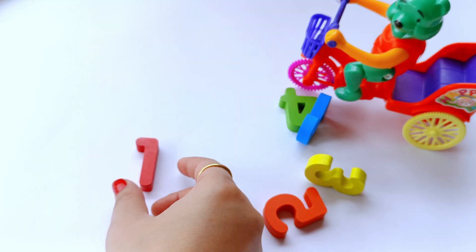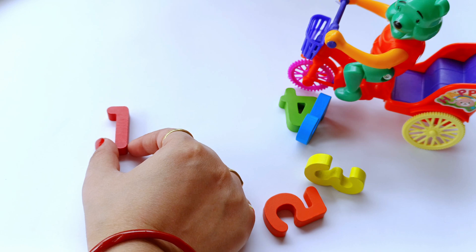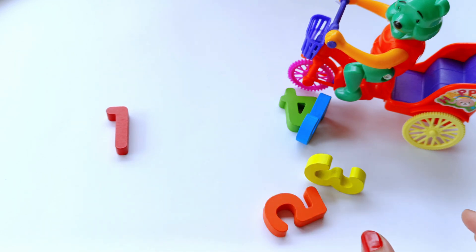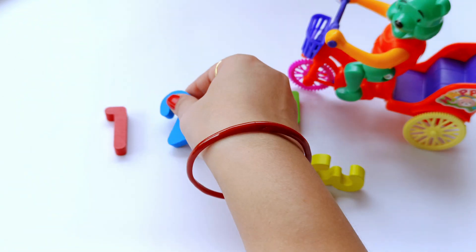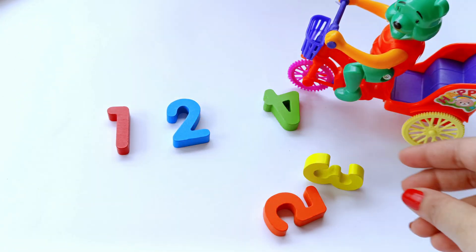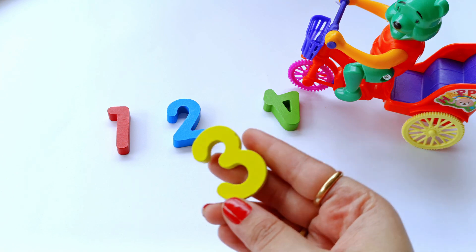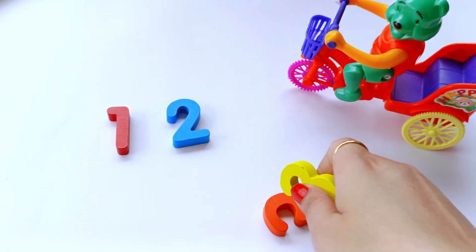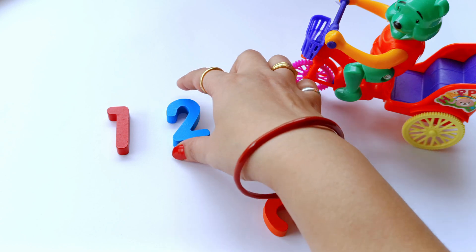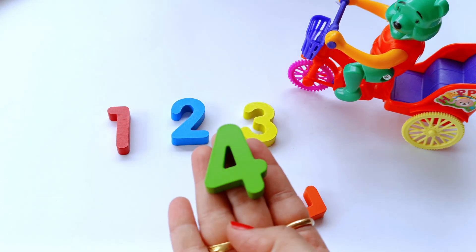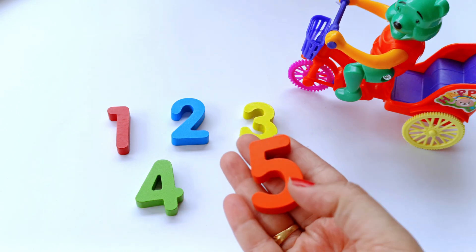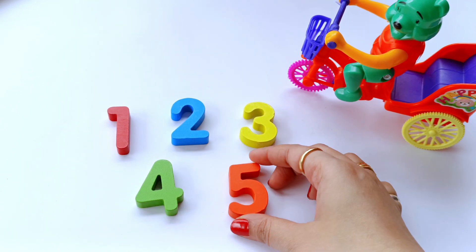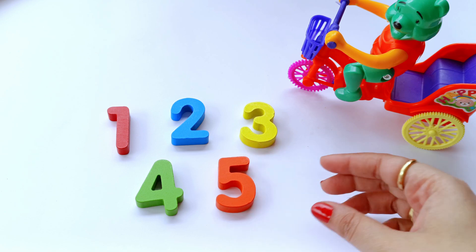Number 1, it's red in colour. Then next number. Number 2, it's colour is blue. Number 3, it's yellow in colour. Then what's the next number? Number 4, it's a green colour. And number 5, it's orange colour.